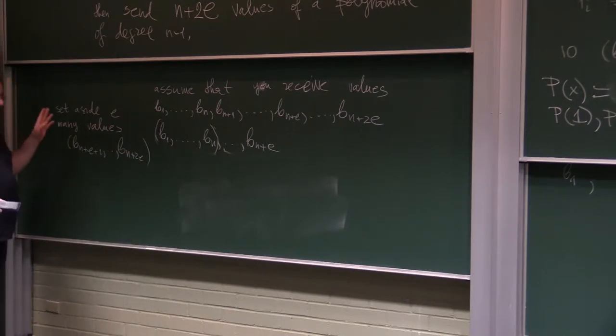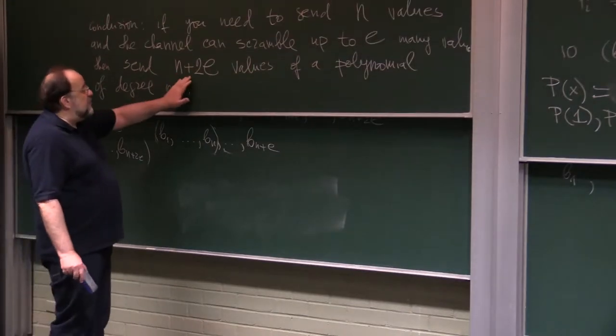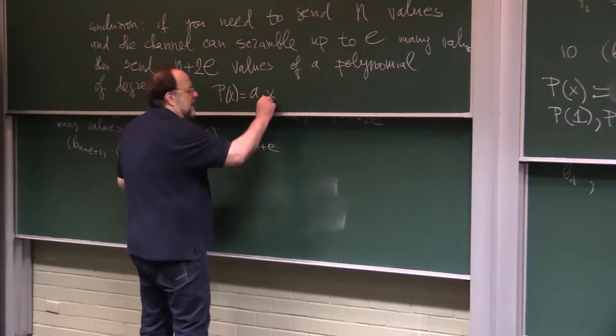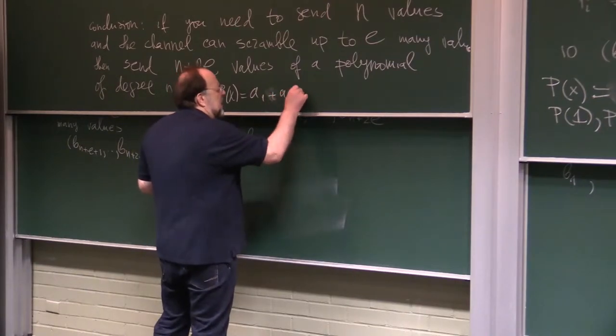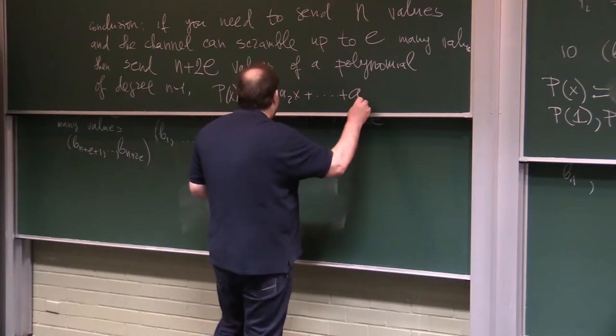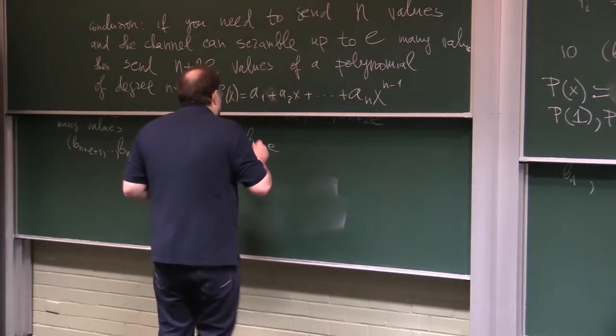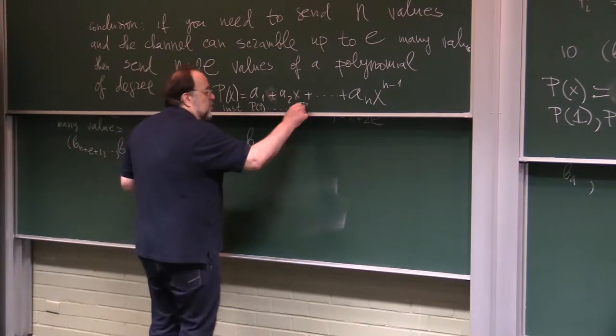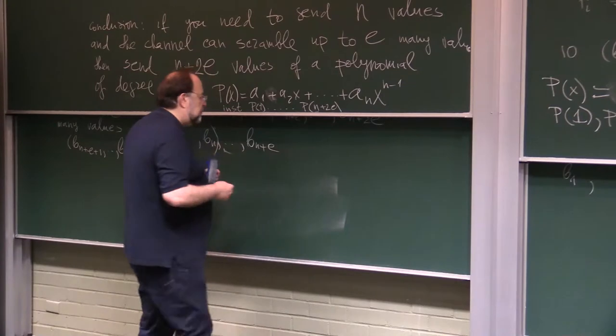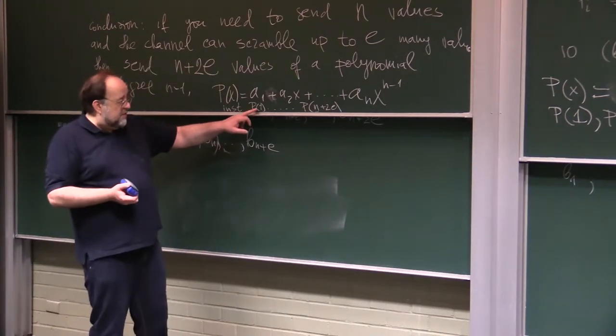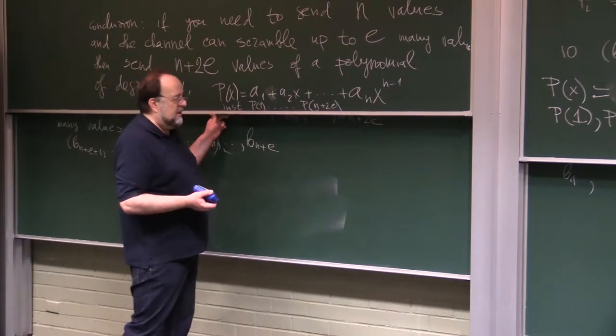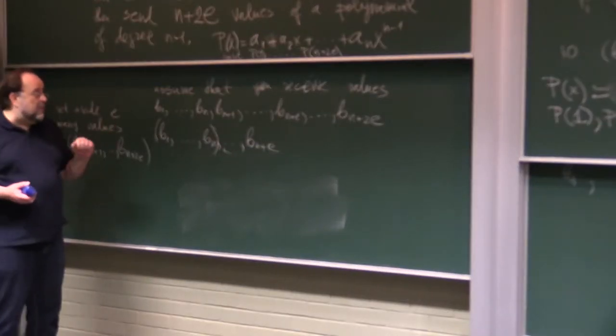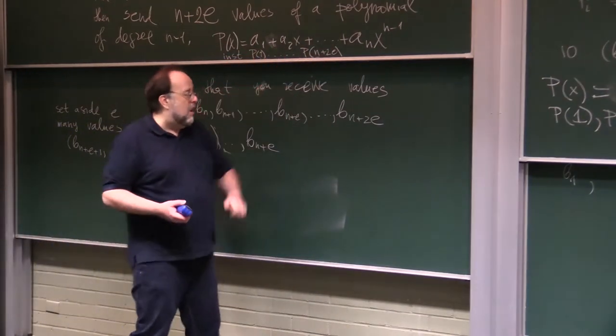So you send n plus 2e many, so your polynomial p of x is equal to a1 plus a2x plus anx to the n minus 1. Instantiate p of 1 all the way to p of n plus 2e. Send to your transmission channel n plus e values of this polynomial. Now, I claim if at most e values are wrong, I can still recover the coefficients of the polynomial.